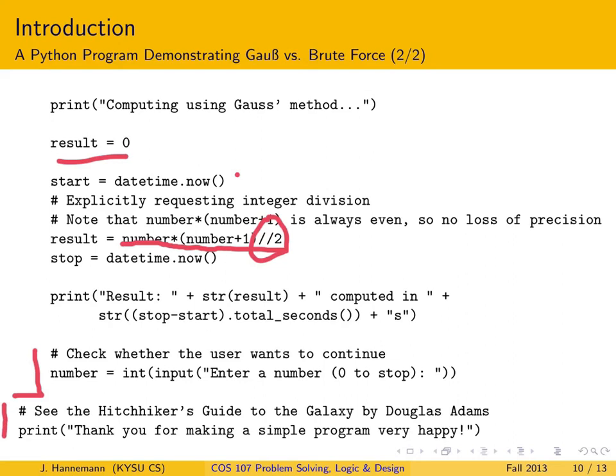You can download this from the Blackboard site and execute it in your Python interpreter. The next module will show you interactively how to get Python onto your machine, if you don't already have it, how to start the Python interpreter, and how to use it. That's the Python program — now let's see what happens when we run it.